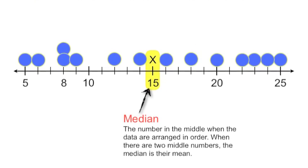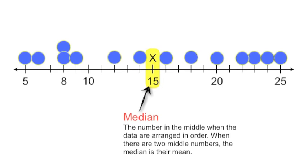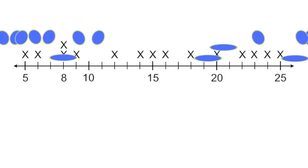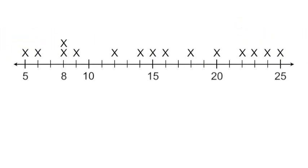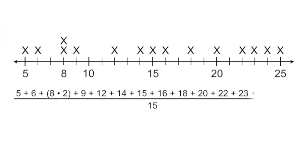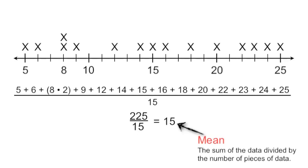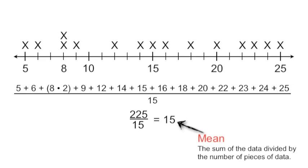And the one last piece of measure of central tendency we need to find is the mean, which we typically refer to as the average, but really all three of these examples are the average. So we just need to add up the sum of the numbers, divide them, and we will have our mean.